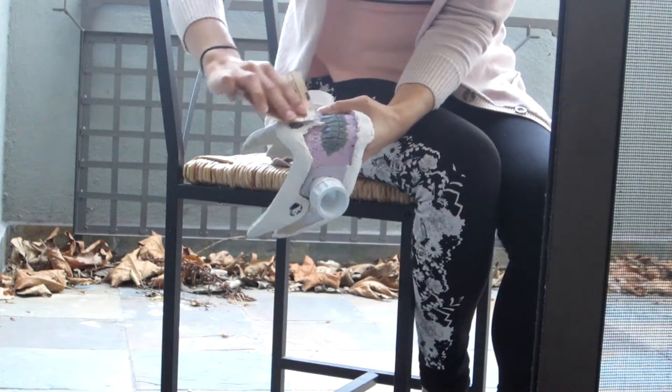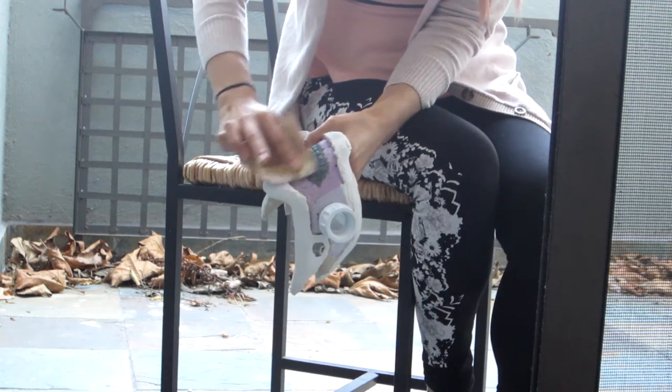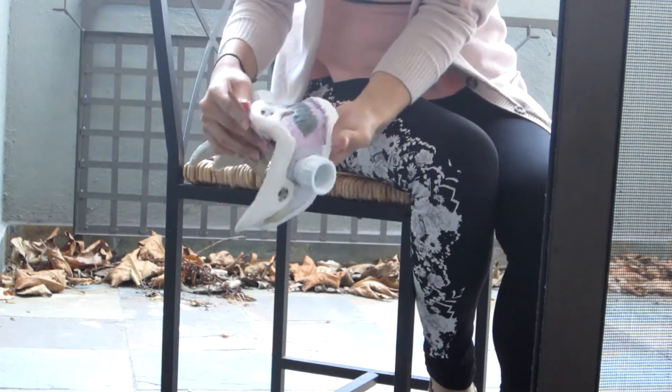Once you finish sanding, everything is going to be dry, everything's going to be set. So what you're going to want to do is take another layer of Mod Podge, put it all over the surface, let it dry for a little bit.